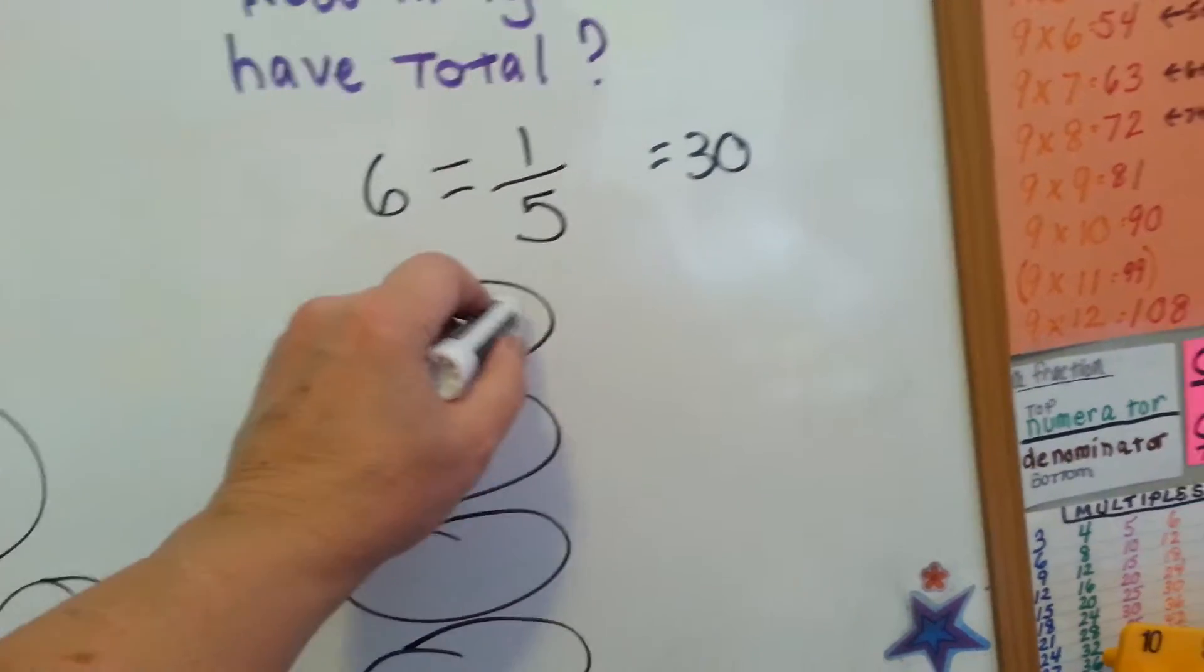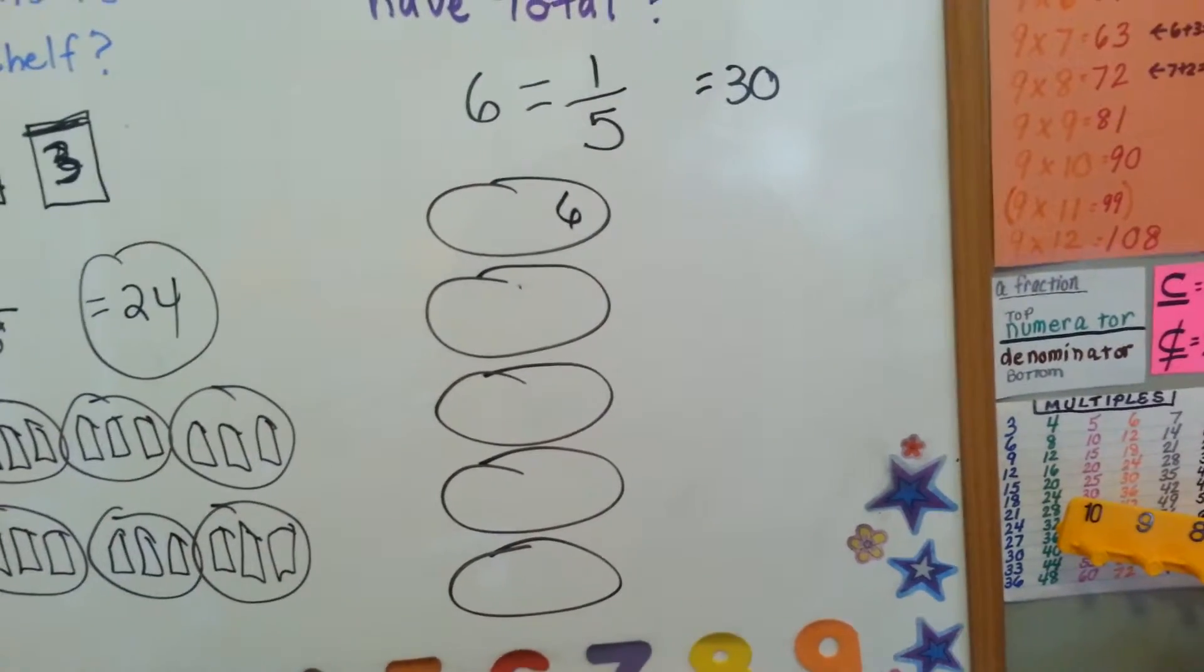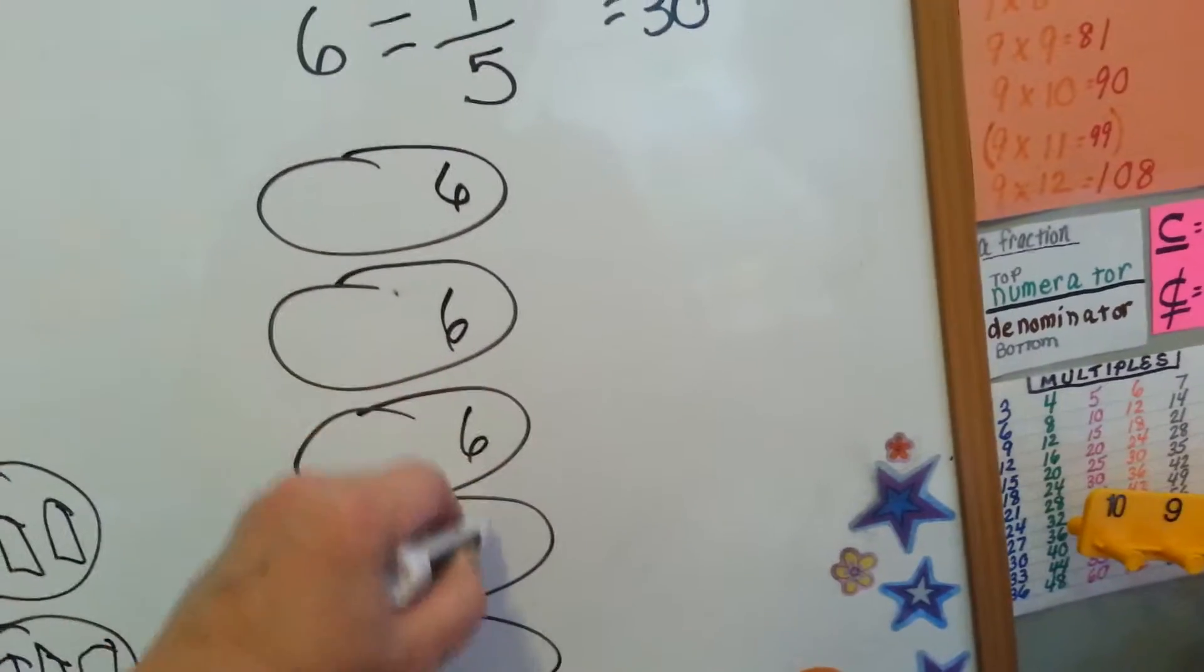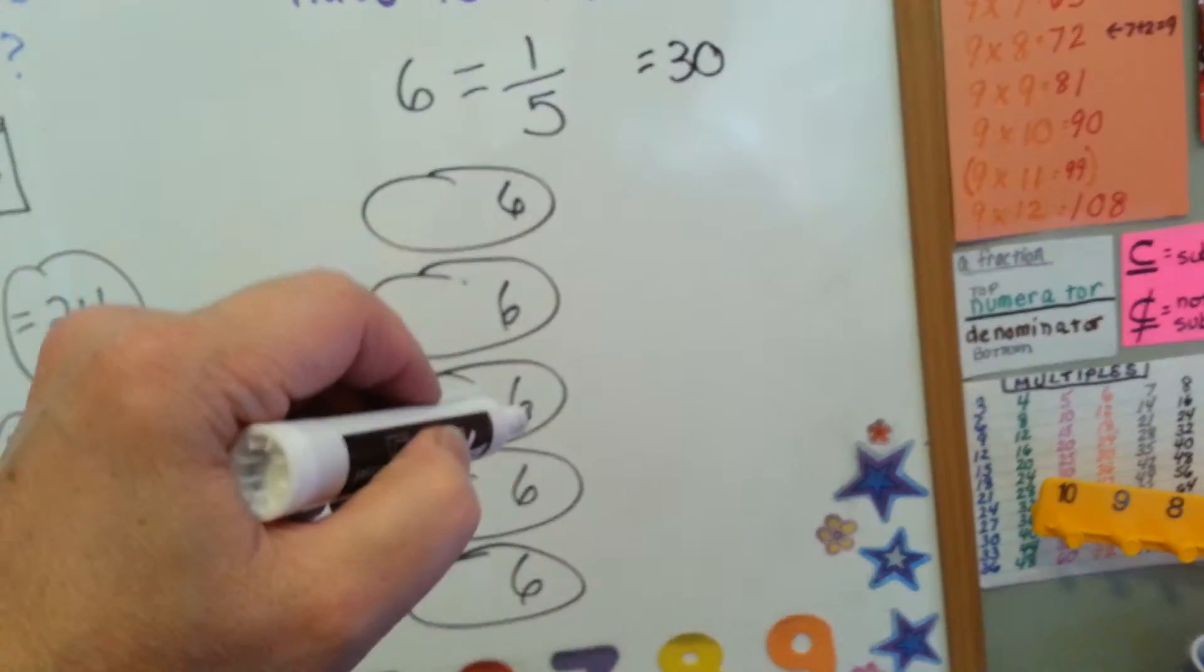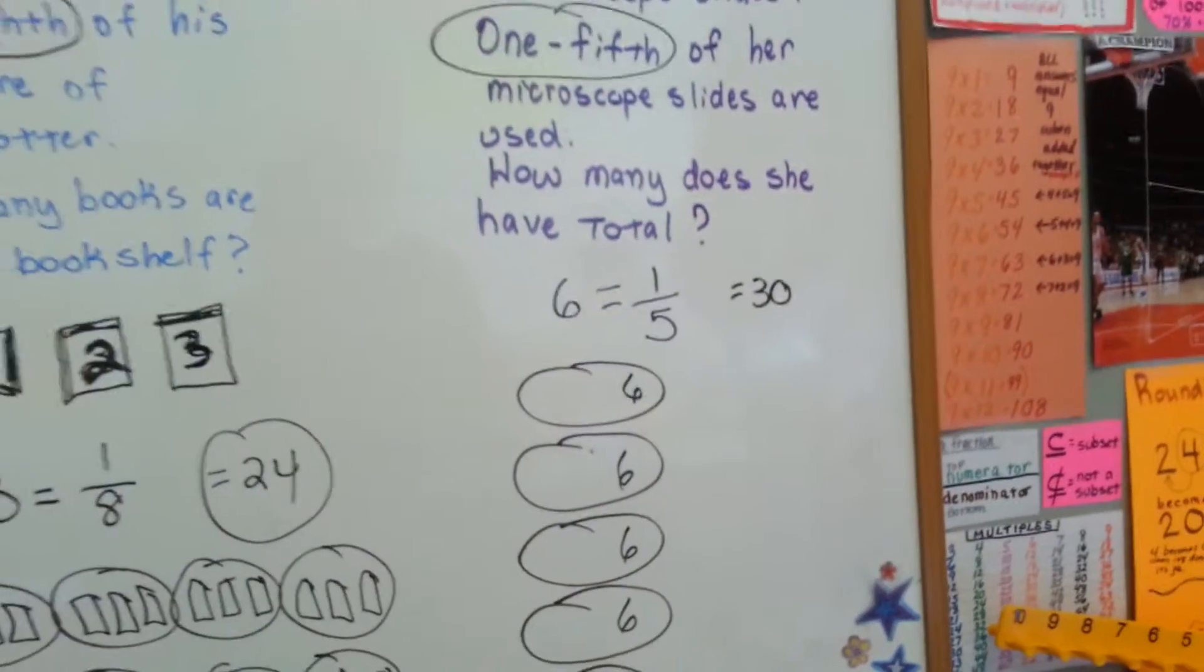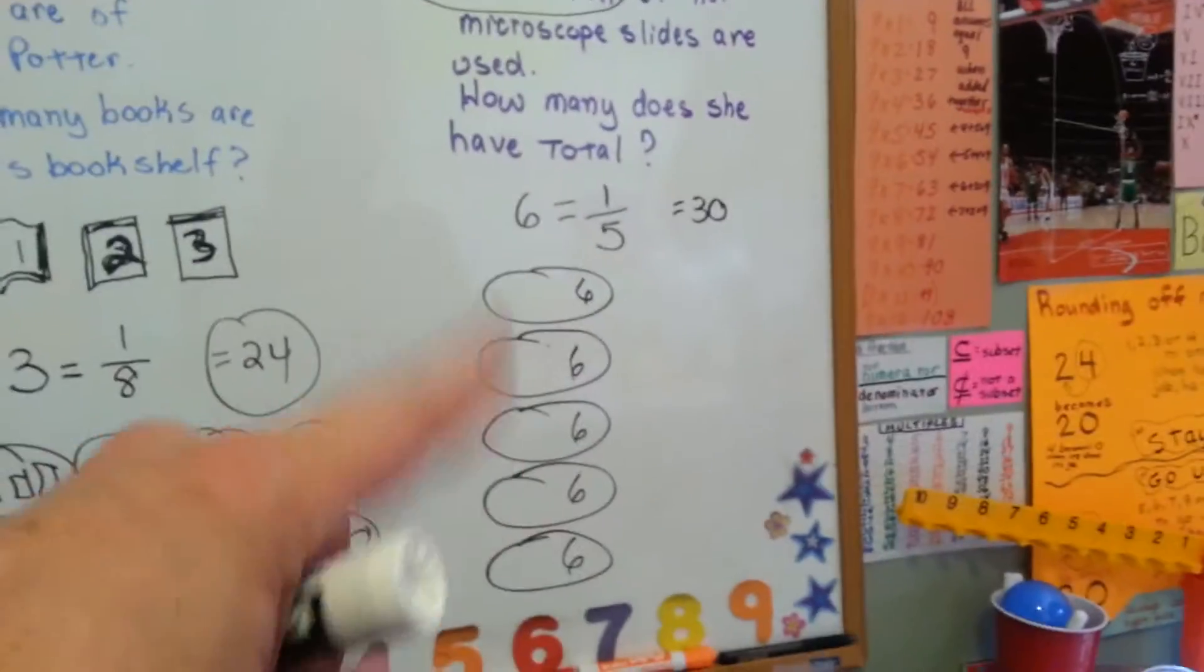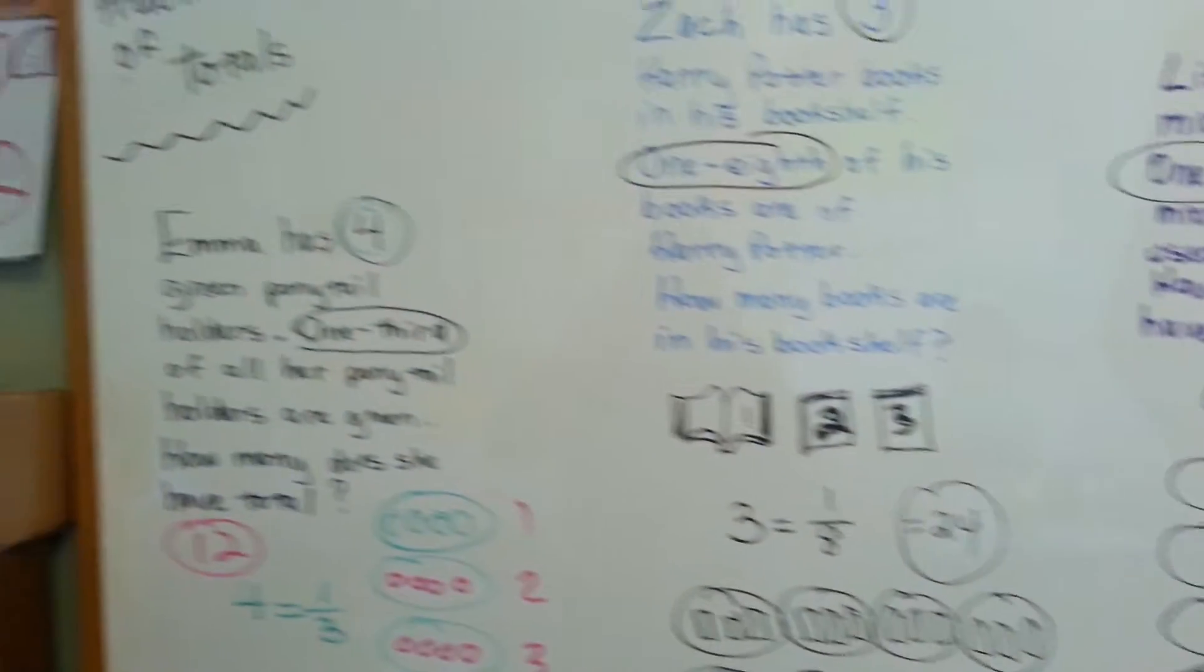One of them is six used microscope slides. Well, that means all these other groups must be six also. And we got one, two, three, four, five. Five times six is thirty. So yeah, she has thirty microscope slides in all. Six of them are used. But she still has twenty-four clean, good ones that she can use.